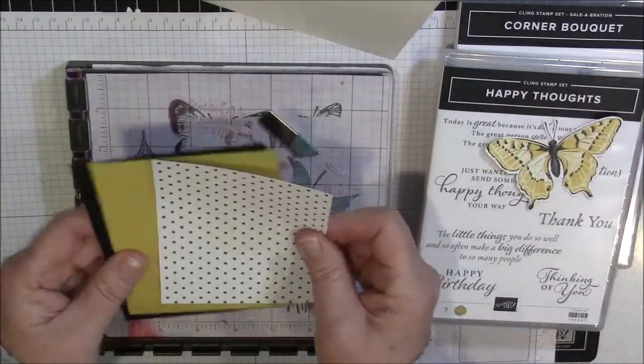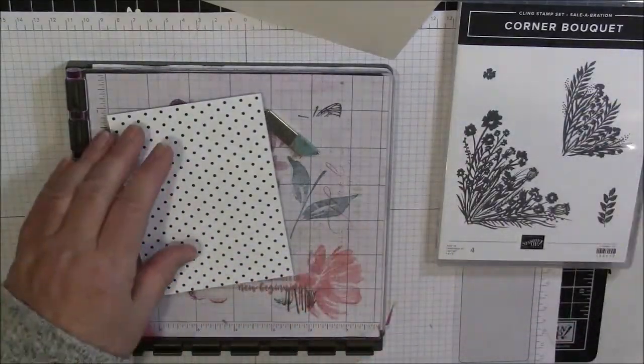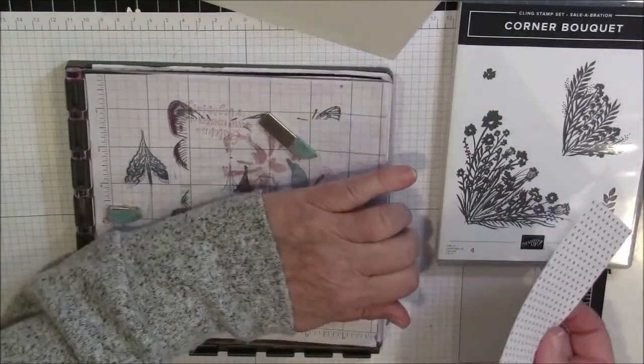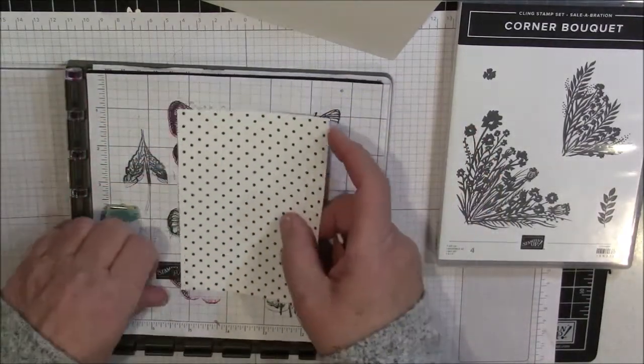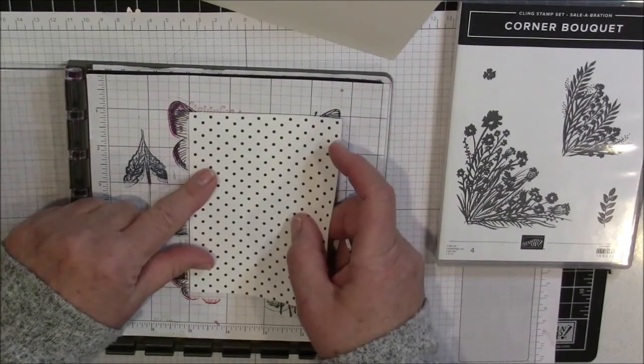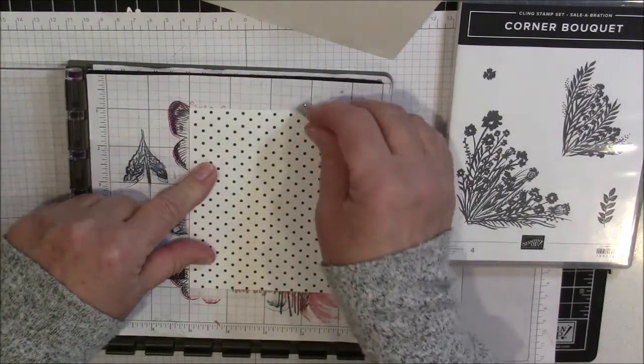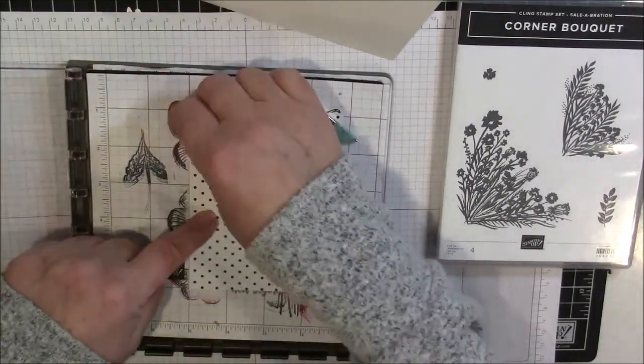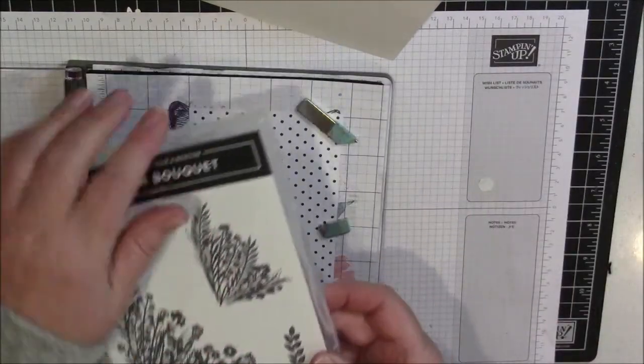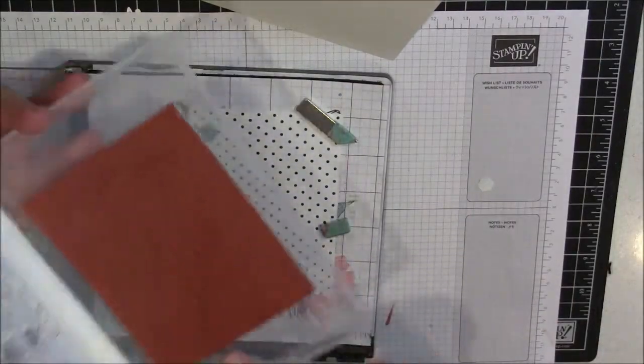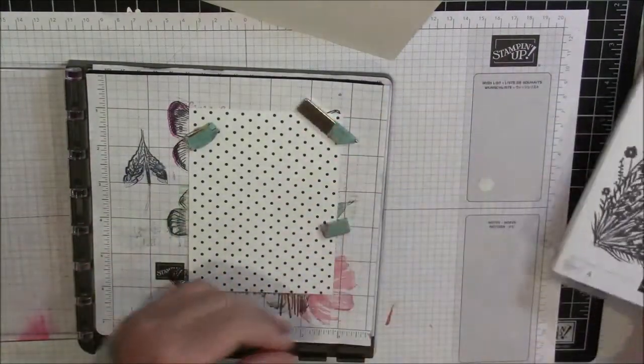Okay, like I said, we're going to be using the corner bouquet stamp set. So let's get that going. So I want to stamp the corner bouquet in one of the corners of my designer series paper. So I'm going to line it up onto my Stamparatus and get it down really good. I'm going to be using this image today. I may use some of these leaves too, but I'll see once I get the butterfly on.